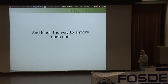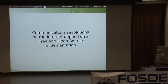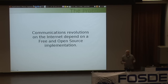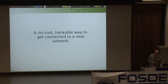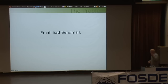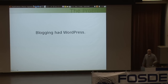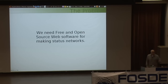Free and open source software can lead the way to a more open web. Communication revolutions on the internet have always depended on free and open source implementations of open protocols to make standards move forward, because people who are experimenting with these standards need a no-cost, hackable way to get connected into a new network. Email had Sendmail. The web had Apache. Blogging had WordPress. We need free and open source software for making status networks.